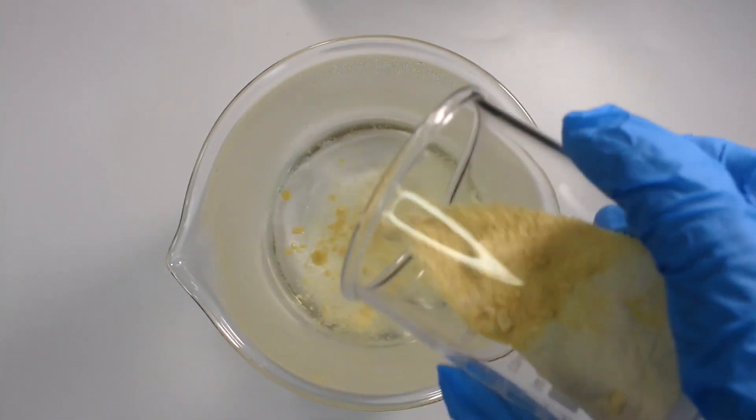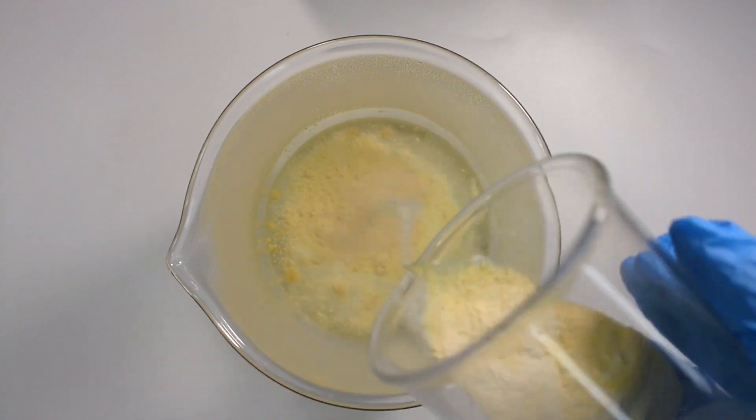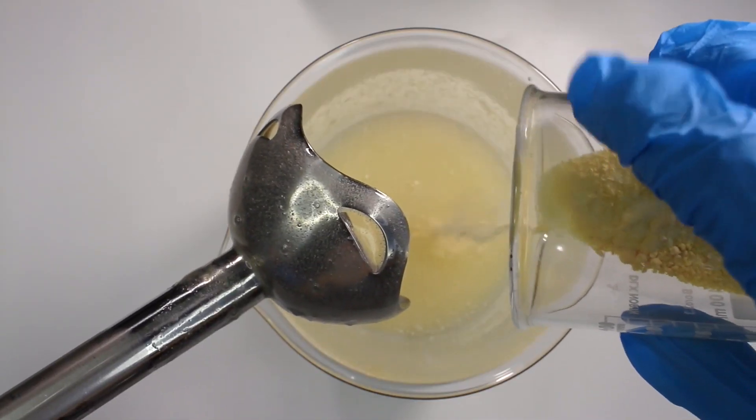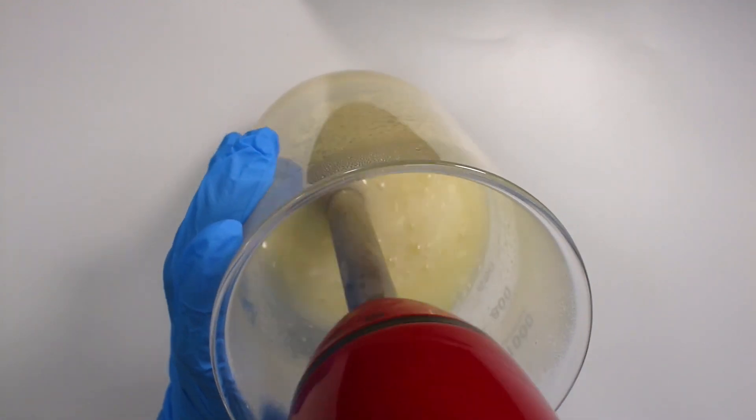So I start out by just pouring a little bit of the gelling mixture into the water phase, blend it with an immersion blender, add a little bit more, blend it again, and just keep doing this until I have it all incorporated.